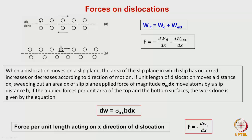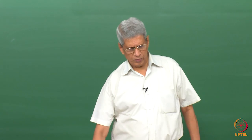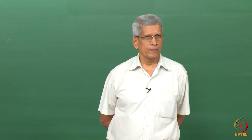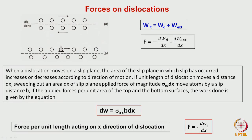Let us consider the case where no dislocation is present. There is a slip plane over which one layer of atoms moves on top of another. When a stress is applied, what types of forces can we have? Now suppose a dislocation is present in the material. What does this dislocation do? We will see that the dislocation moves from one position to another.